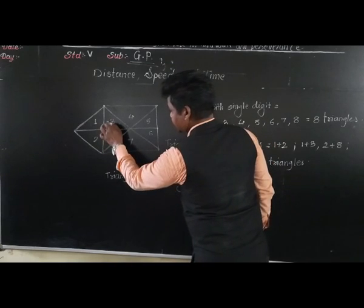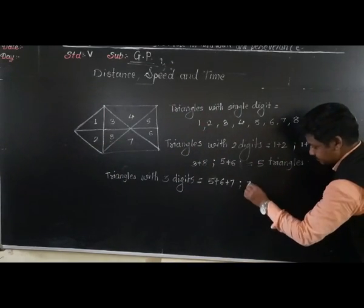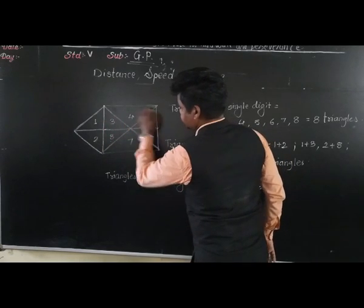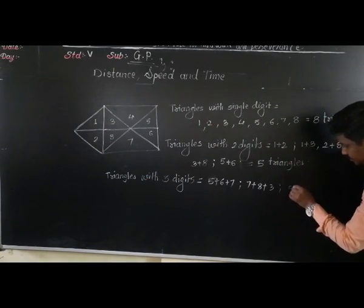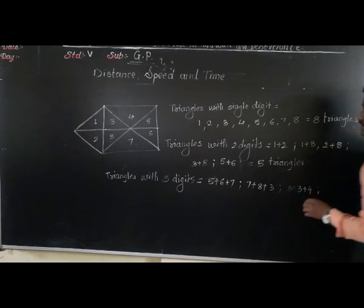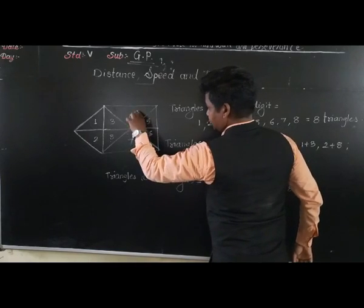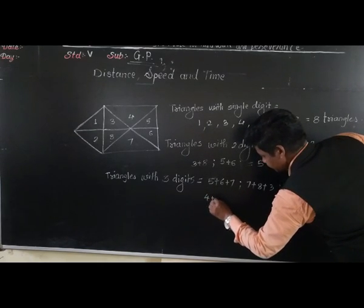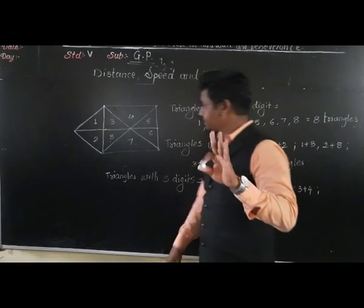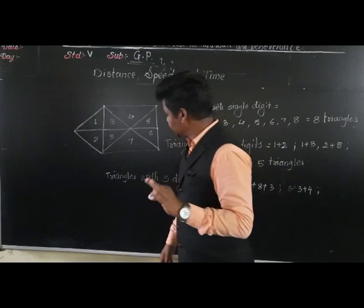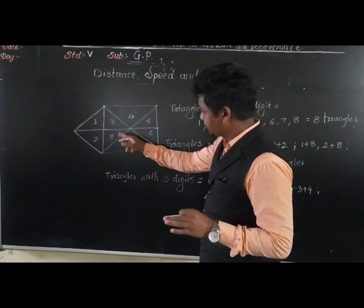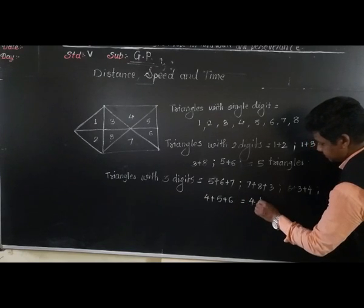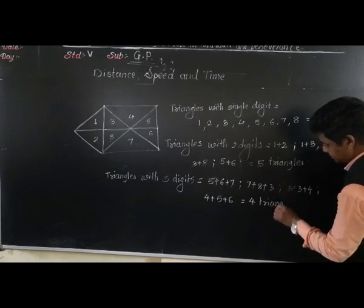Similarly, 7 plus 8 plus 3 together — is it a triangle? Yes. And 8 plus 3 plus 4 together — yes. And 4 plus 5 plus 6 — these 3 parts together form a triangle. Any other combination of 3 digits forming a triangle? No. So total 4 triangles with 3 digits.